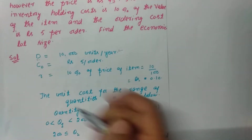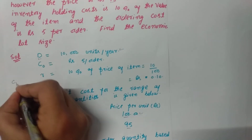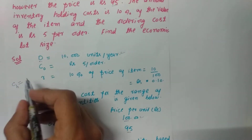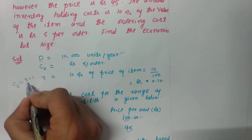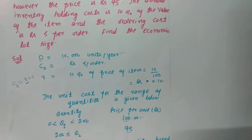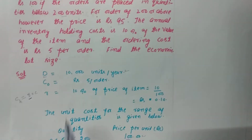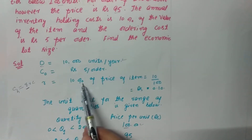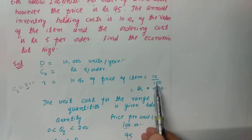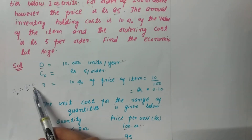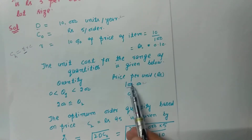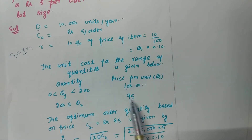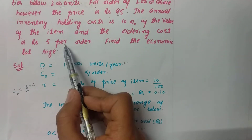The holding cost, when expressed as a percentage, is calculated as R multiplied by the unit cost, where R is the given percentage. Here R is 10%, so holding cost equals 0.10 multiplied by the price of the item. The price is 100 rupees or the discounted price of 95 rupees, as applicable. The ordering cost is 5 rupees per order.